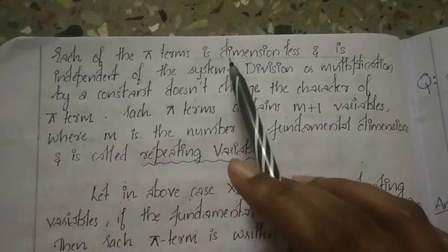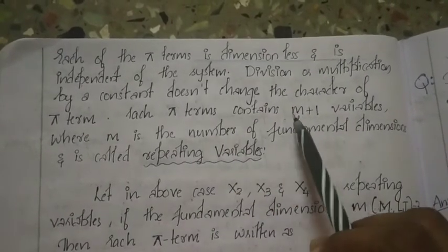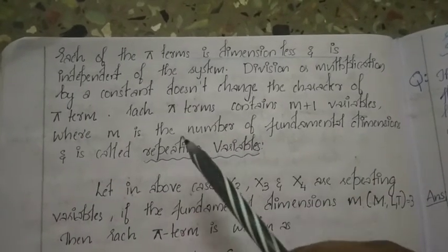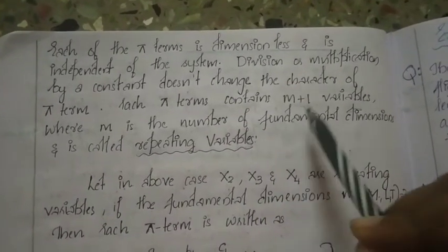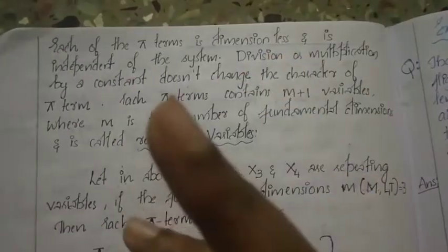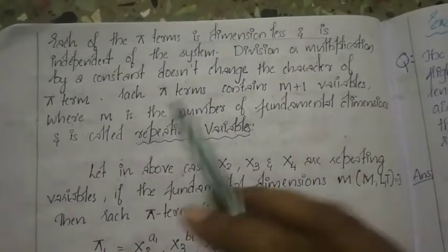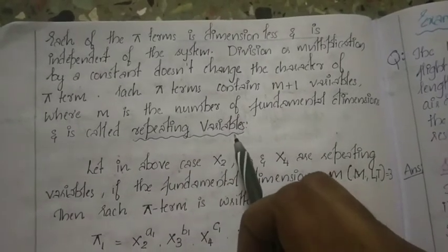Each Pi term is dimensionless. Also, each Pi term contains m+1 variables. For example, if m = 3, then each Pi term contains 3+1 = 4 variables. Here, m is the number of fundamental dimensions, and m is also the number of repeating variables.